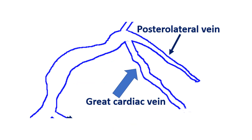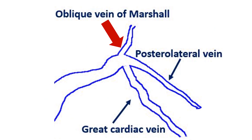The great cardiac vein starts from the apex and drains upwards in the anterior interventricular sulcus. In its initial part, it is also known as the anterior interventricular vein. In the anterior interventricular groove, it lies alongside the left anterior descending coronary artery. At the base of the heart, it travels leftwards and curves posteriorly near the left atrial appendage. Posteriorly, it converges with the oblique vein of the left atrium, or oblique vein of Marshal, and forms the coronary sinus.